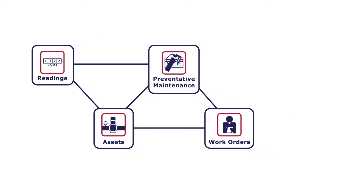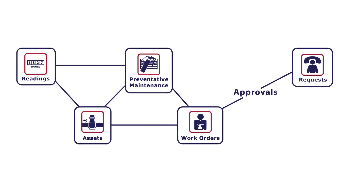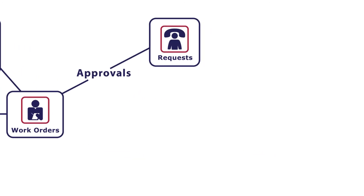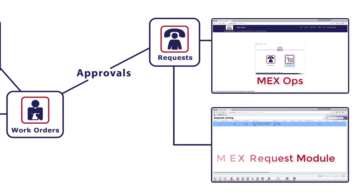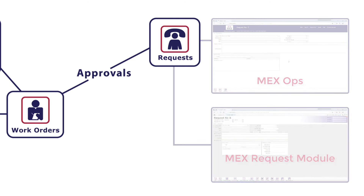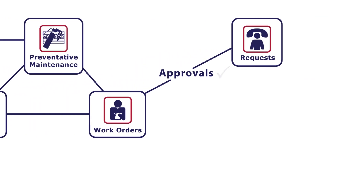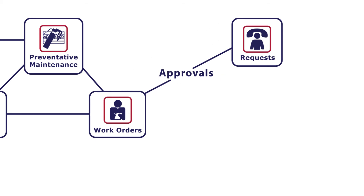I might also use the requests module. Maintenance requests can be entered via an external application called MEX OPS, or within this module by various employees. These requests then go through an approval stage, if required, and once approved, the request can then be migrated into the work order module, allowing it to become part of my maintenance backlog.